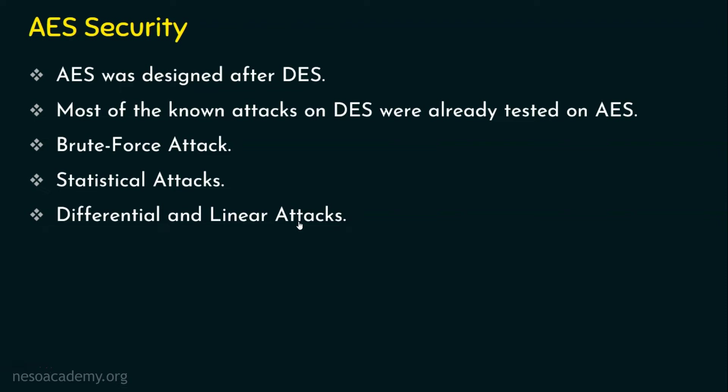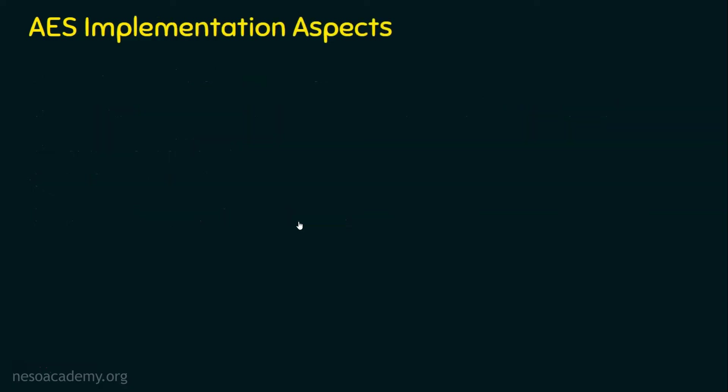We are done with the AES security aspects. Let's now move on to the implementation aspects of AES. AES is a very simple algorithm, and because of its simplicity it is widely used. These simple characteristics are one of the major reasons for implementing it in a variety of places and applications — even in hardware and software — everywhere. Does being simple raise concern about attacks? Obviously, no.